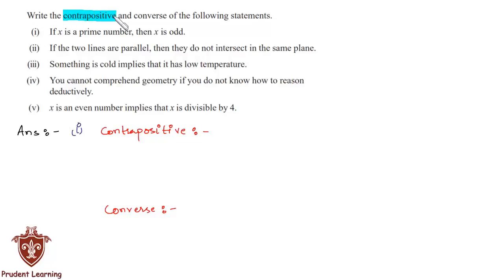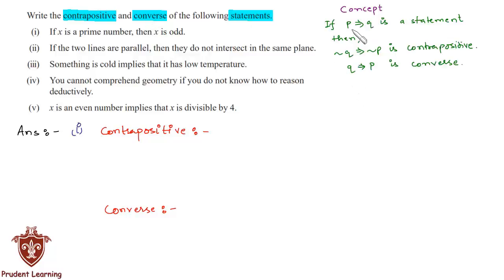In this question we are given five statements and we need to write the contrapositive and converse for each. Before solving, let us recall the definitions: if p implies q is a statement, then negation q implies negation p is the contrapositive, and q implies p is the converse.